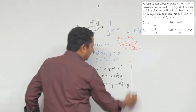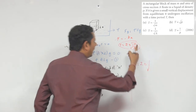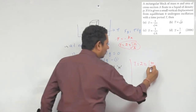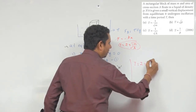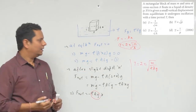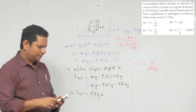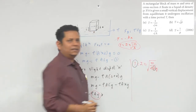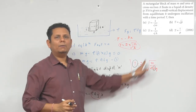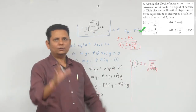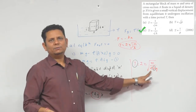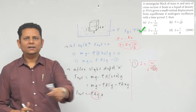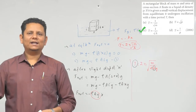Therefore, the time period T = 2π√(m/k) = 2π√(m/ρAg). Comparing with the options: T is directly proportional to √M, inversely proportional to √A, and inversely proportional to √rho. So option A is wrong, options B and D are wrong, and option C is the right answer.